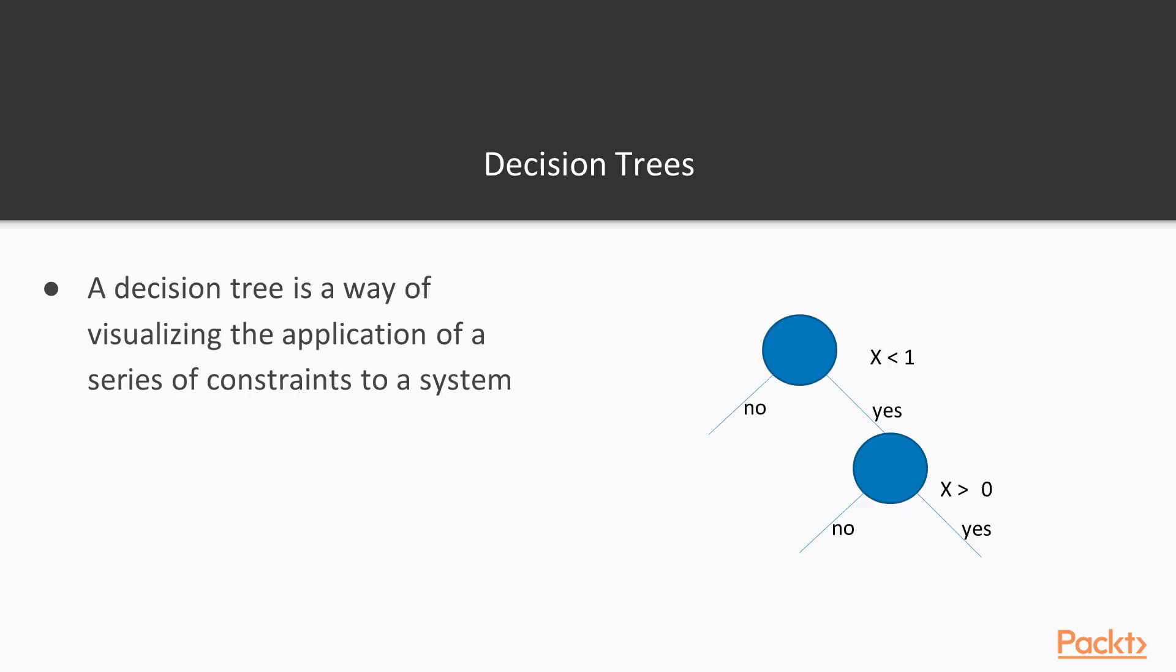A decision tree is a way of visualising the application of a series of constraints to the system. For instance, if we have variable x, we say if x is less than 1, take this node, and if it isn't, take this node. If x is less than 1 and greater than 0, take this node. If it's less than 1 and less than 0, take this node. You can see how we might sequentially apply decision trees to arrive at a solution.